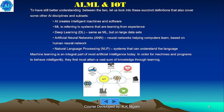To have a better understanding between the two, let us look into these succinct definitions that also cover some other AI disciplines and subsets. AI creates intelligent machines and software. ML — that is machine learning — refers to systems that are learning from experience. Deep learning is the same as ML but on large datasets, working on artificial neural networks. ANN — artificial neural network — helps computers learn based on the human neural network. Natural language processing, NLP, refers to systems that can understand language. Machine learning is an integral part of most artificial intelligence today.